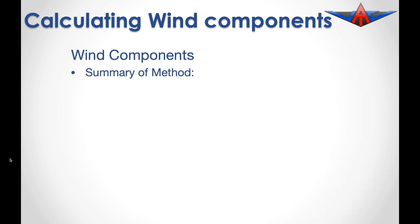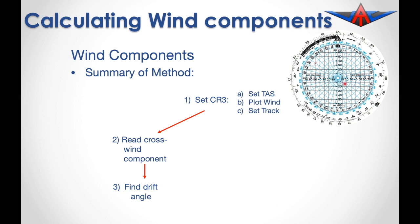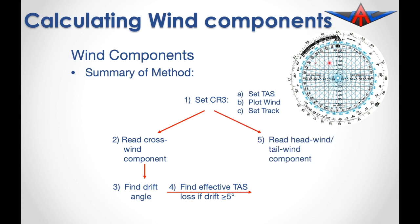Just to summarize: our first step is to set up the CR3 computer — setting the TAS, plotting the wind, and setting the track. Once these three are set, our next step is to read off the crosswind component by dropping down vertically. That then allows us to calculate a drift angle, which then allows us to calculate the effective TAS loss, which must be applied if our drift is 5 degrees or more. We then read the head or tailwind component, and that gives us a total wind component when we combine it with the effective TAS loss.